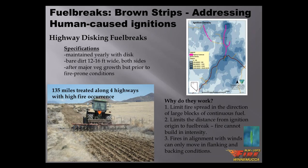These have been very successful. One reason we think they've been successful is that they really limit the distance from the ignition point — usually right along the highway from a trailer, dragging chain, or vehicle fire — to where it hits the fuel break. There's probably no more than 20 or 30 meters between where it starts and where it hits the fuel break, so the fire hasn't built up in intensity. These fires also aren't in alignment with winds when they hit the fuel break, most of the impact being in flanking and backing conditions. They really protect large blocks of continuous sagebrush habitat along these transportation corridors.